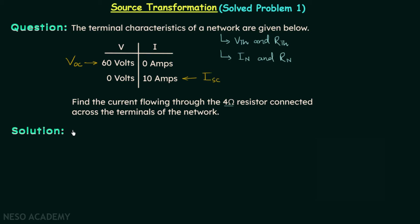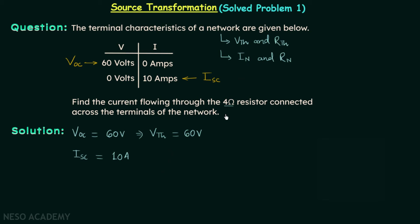From this table we have the open circuit voltage equal to 60 volts and the short circuit current equal to 10 amperes. Since Vth is the open circuit voltage, Vth equals VOC, which is 60 volts. Norton's current In equals ISC, so In equals 10 amperes.